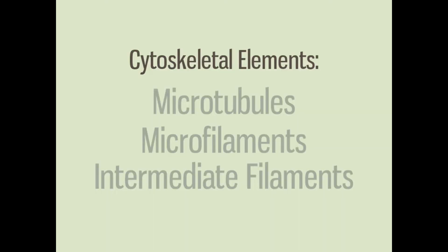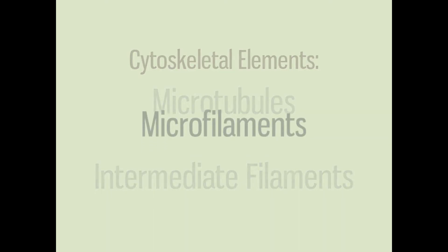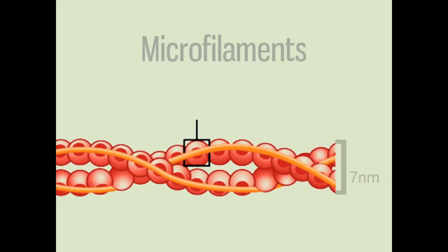The second major type of cytoskeletal structures are called microfilaments. The smallest kind, they are composed of two intertwined strands of actin polymers, each made up of many individual actin monomers. Like all cytoskeletal elements, they help to maintain cell shape, but microfilaments are also key to changing cell shape.